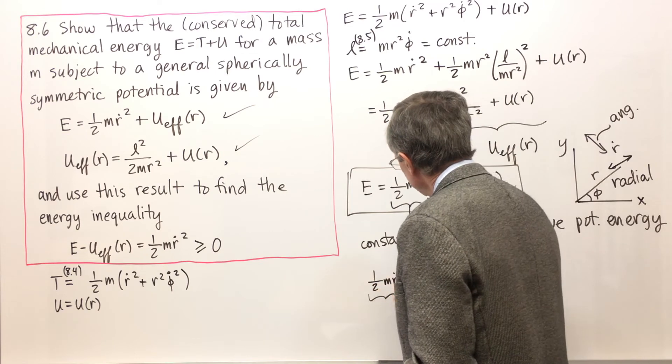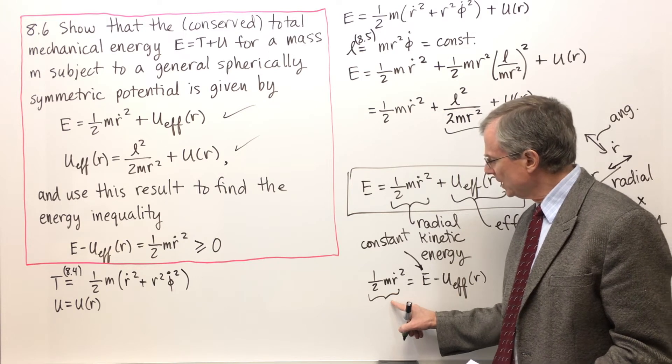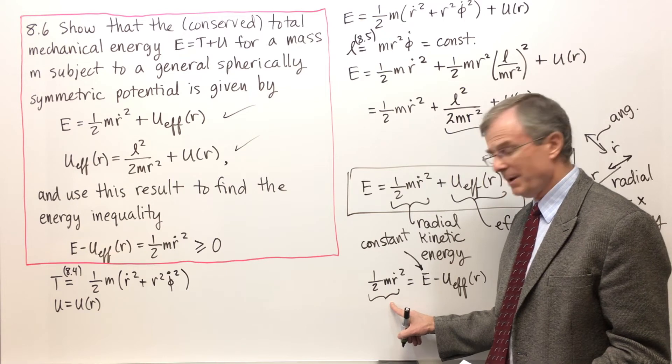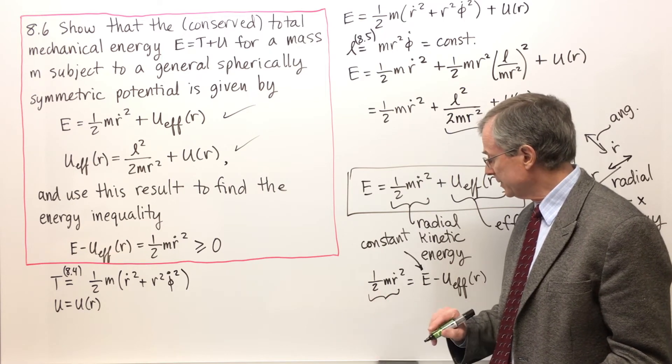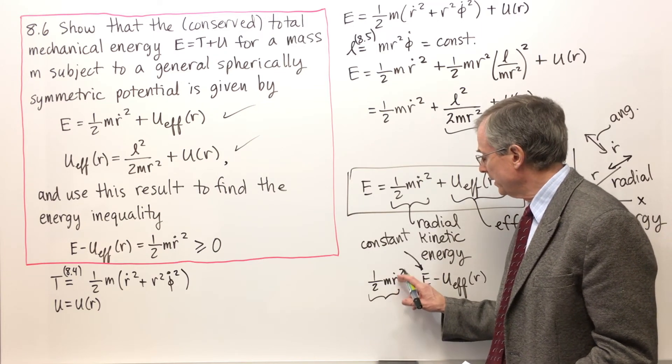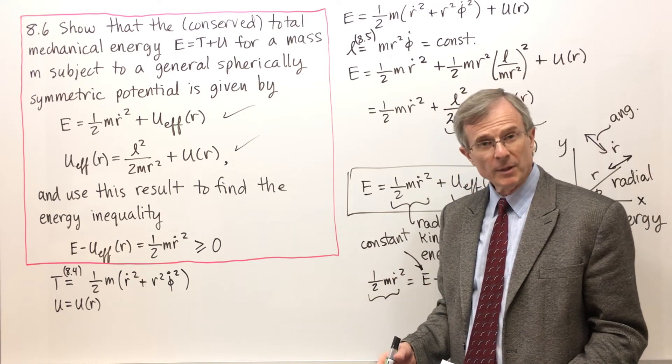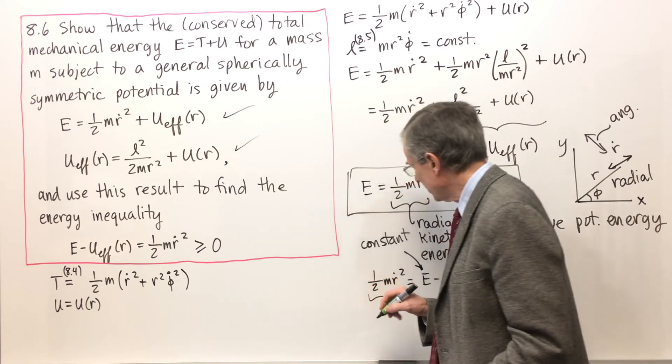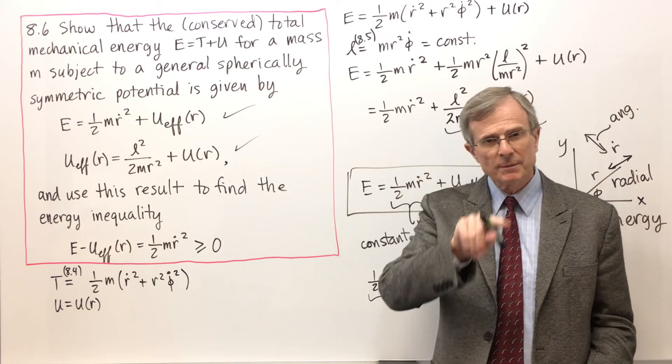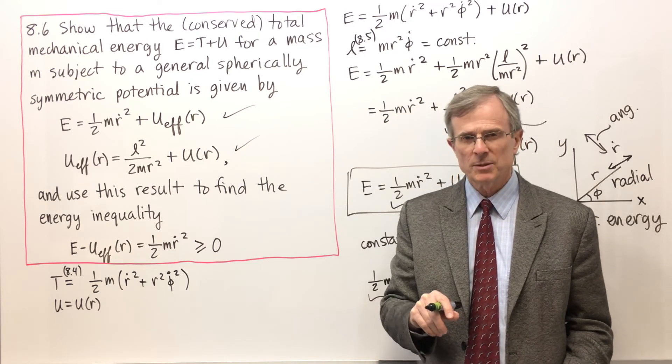Well first of all what about this guy here, can he be less than zero? And you say well probably not Dr. Edwards, because one-half is positive, mass is positive unless you got something really weird, and R dot no matter what, R dot is positive or negative, if you square it either way you're going to get a positive number or zero. R dot could be zero and that would be in the case of circular motion so R is always a constant so R dot is going to be zero.